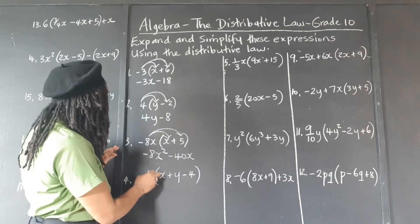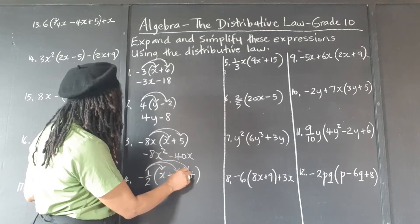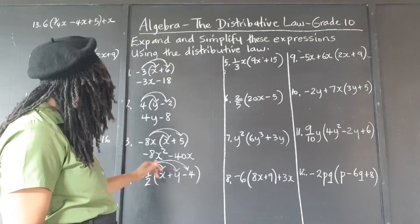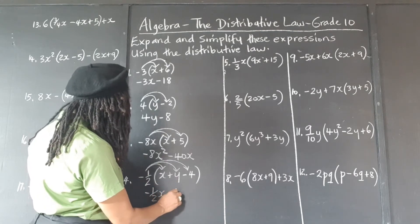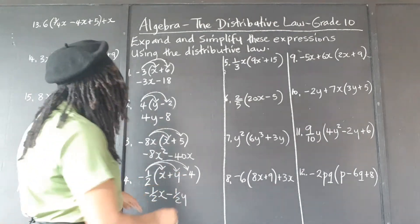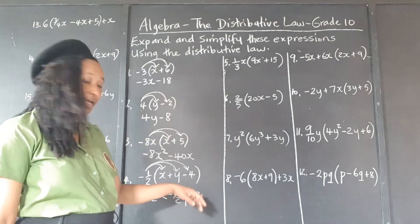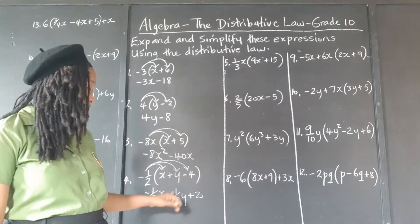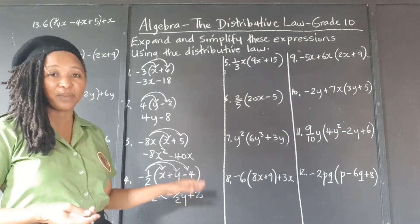Negative a half times x — this is the last one I'm showing with the arrow. The distributive law when we're expanding is also called foiling. Negative a half times x is negative half x. Negative a half times positive y is negative a half y. Negative a half times negative 4: the two negatives multiplying give a positive; half of 4 is 2. So: negative half x minus half y plus 2. Those are all unlike terms — x term, y term, constant term — we can't combine them any further. This is the final answer.